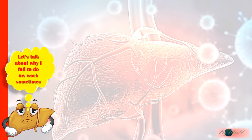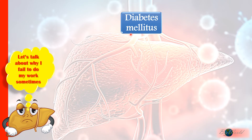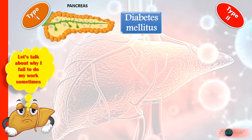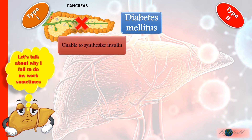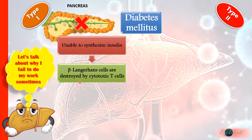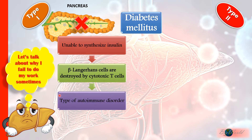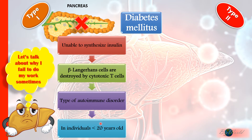Although the liver is an extremely hard-working organ, there are occasions when it is unable to function efficiently, such as in diabetes mellitus. There are two types of diabetes mellitus. Type 1 involves the pancreas being unable to synthesize insulin. This happens when cytotoxic T cells — white blood cells — begin to destroy the beta-Langerhans cells. When the immune system attacks its own host, it is called an autoimmune disorder. This condition occurs in individuals below 20 years of age, and since it is related to insulin synthesis, type 1 diabetes is also known as insulin-dependent diabetes.